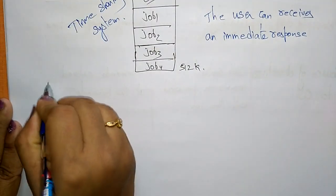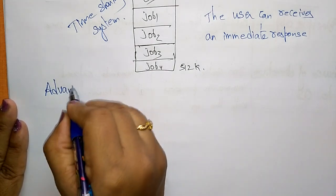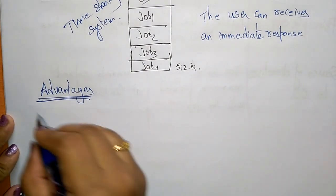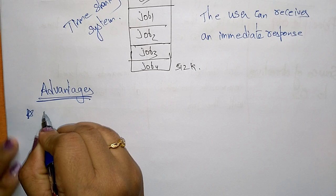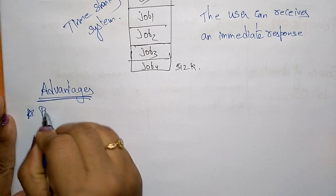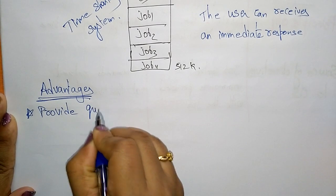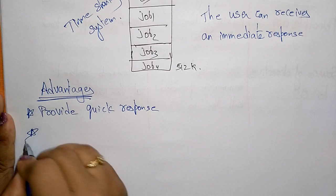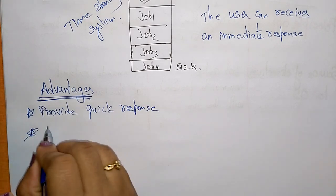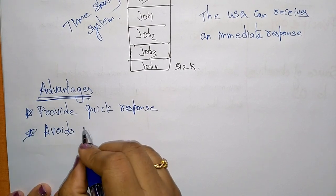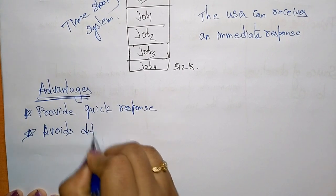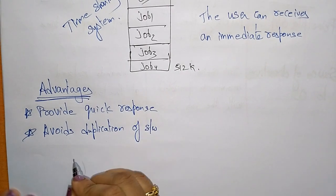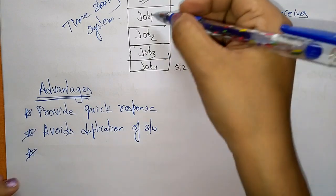Now let's see the advantages of using a time sharing system. The first advantage is it provides quick response. Second, it avoids duplication of software. Third, it reduces CPU idle time, because the jobs are executing frequently.